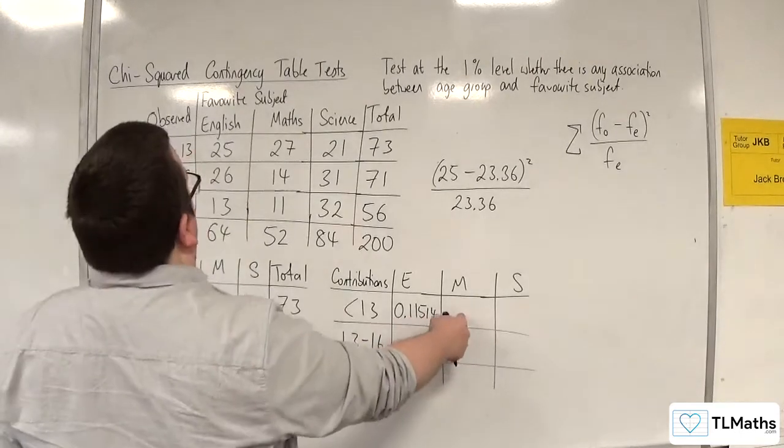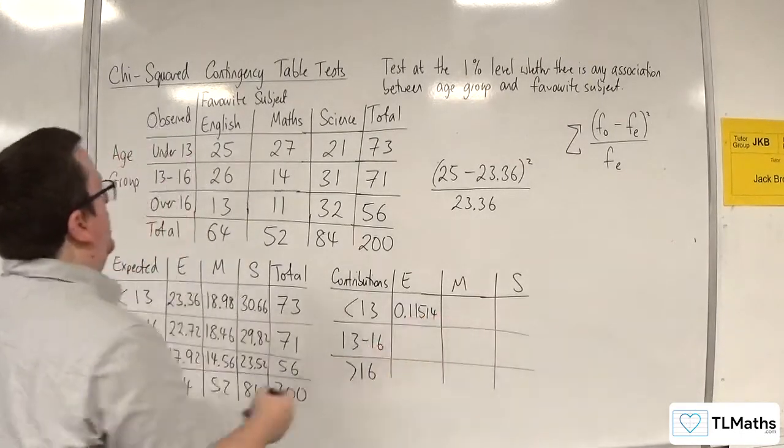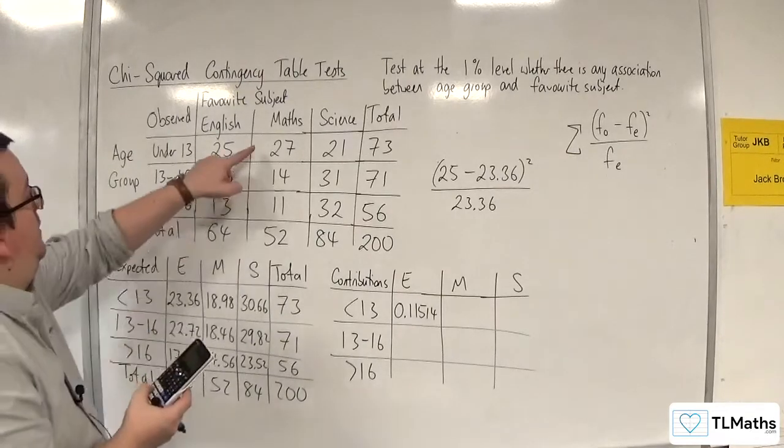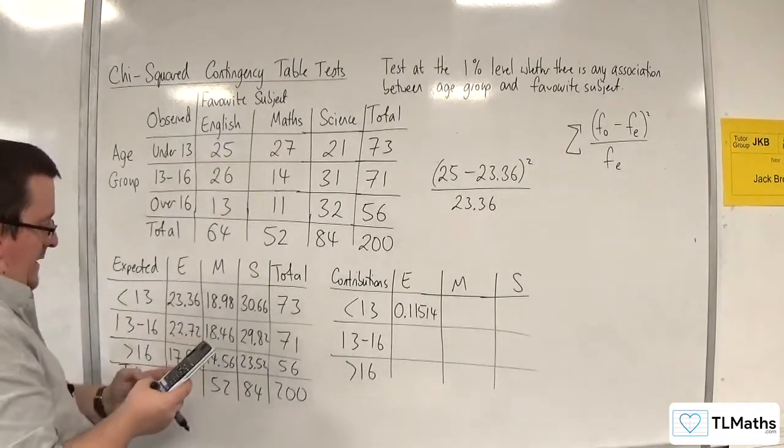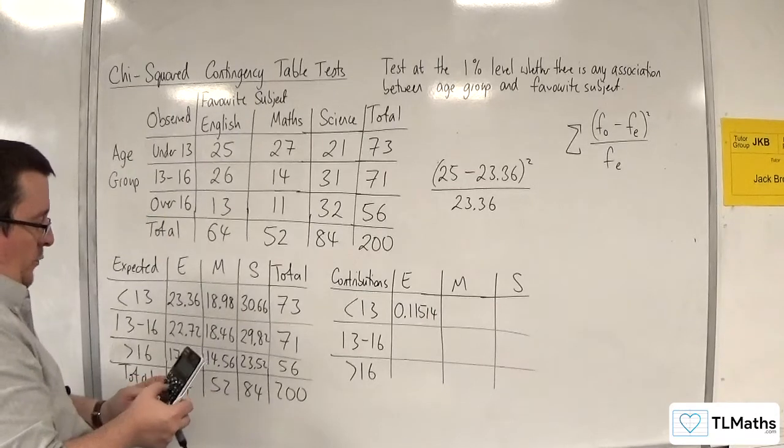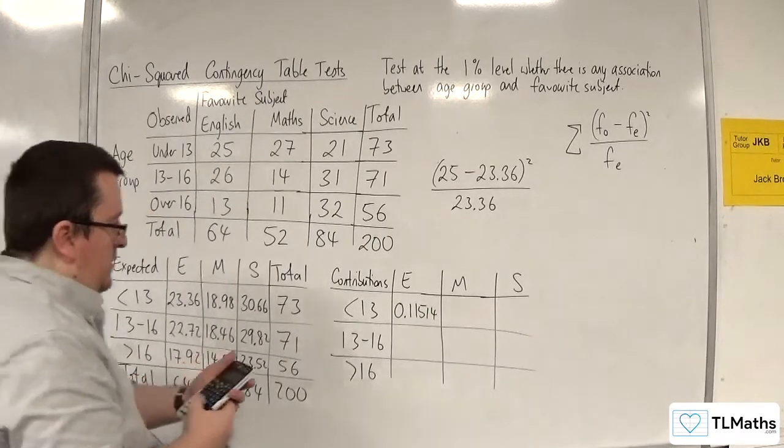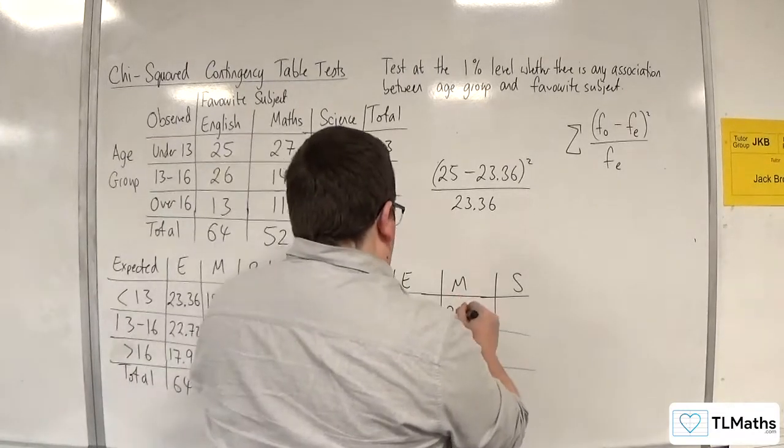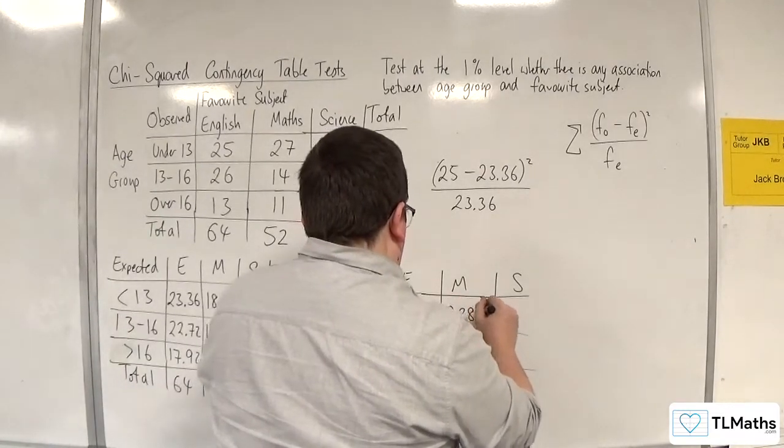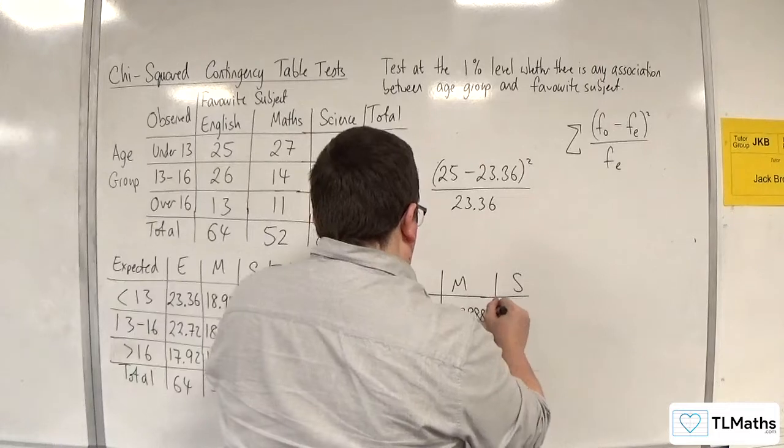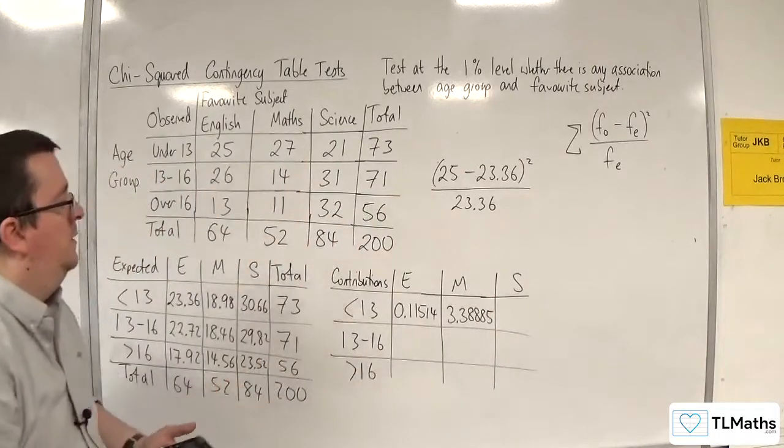Right. So let's go for this one next. So that will be 27 take away 18.98, all squared, divided by 18.98. So in here, we're getting 3.38885.